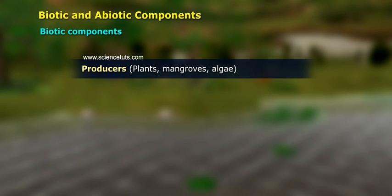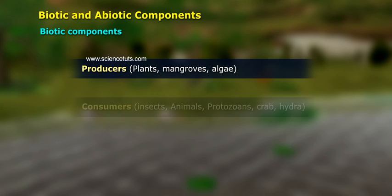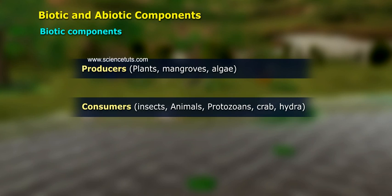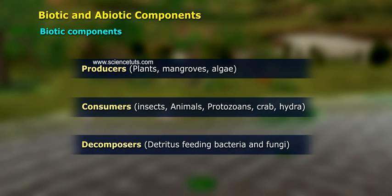Producers include plants, mangroves, and algae. Consumers include insects, animals, crab, and hydra. Decomposers include detritus-feeding bacteria and fungi.